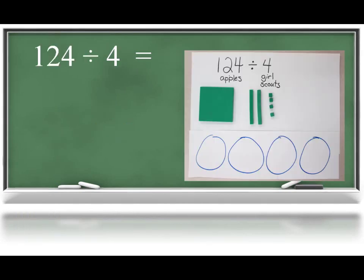Students would then be asked to use a manipulative such as base 10 blocks to model what is happening in the problem. For example, by representing 124 apples with 1 flat for the hundreds, 2 rods for the tens, and 4 unit cubes for the ones, and then using 4 groups to represent the Girl Scouts, they could easily model the division process.